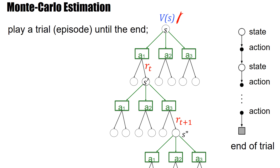So let's play an episode — let's walk through the graph. In state S, I take action A1 and get a first reward. I then take action A3 according to my policy and get a reward, then action A2 and get a reward, and so forth. We play an episode until the end. The backup diagram shows that we start from a starting state and go until the end of the trial.